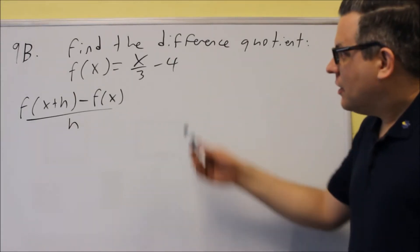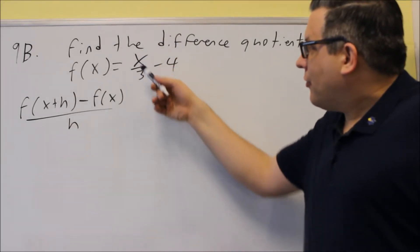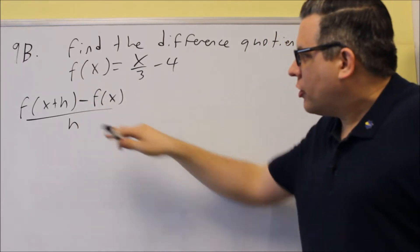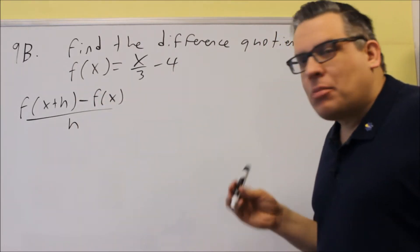Okay, for 9B, we have x over 3 minus 4. We're going to follow the same formula. We're going to do f of x plus h minus f of x.